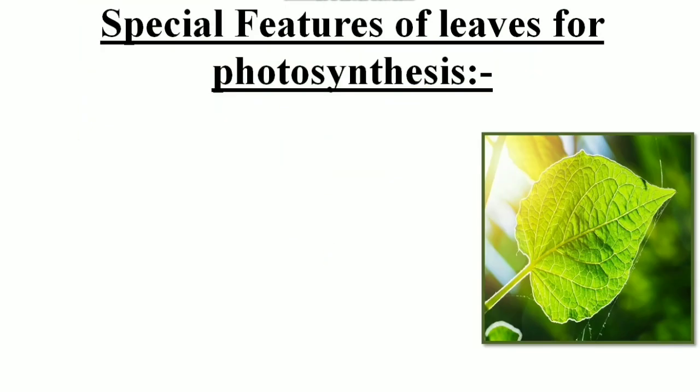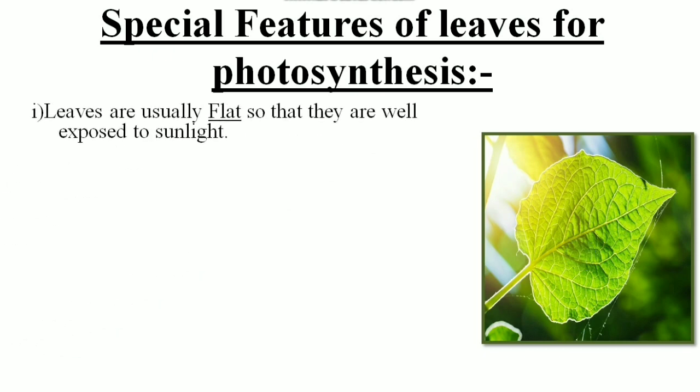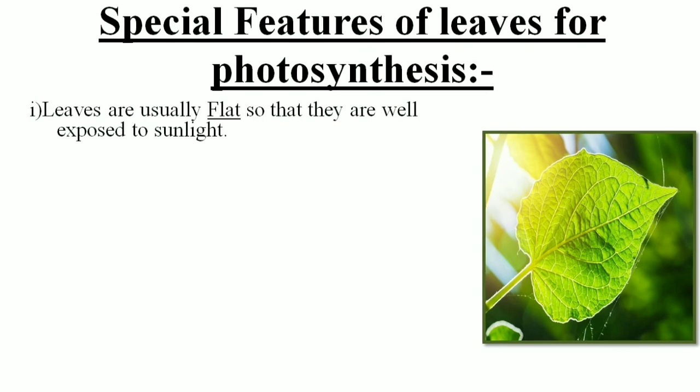Now let's see the special features of leaves for photosynthesis. This is the diagram of the leaf which contains the petiole, the stalk of the leaf and this is the lamina and it contains the veins and the veins along with the midrib. So the first point leaves are usually flat so that they are well exposed to sunlight.